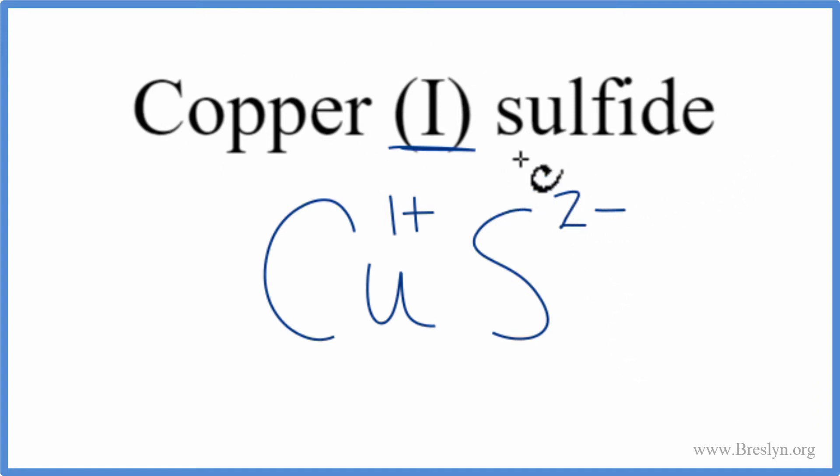So since this is a neutral compound, these should add up to zero, but they don't. We can change the subscripts, though, to fix that, and we can use something called the crisscross method. We can move the 2 here, and then the 1 here. We don't write the 1 by convention. We can get rid of this. And that's the formula for copper 1 sulfide.